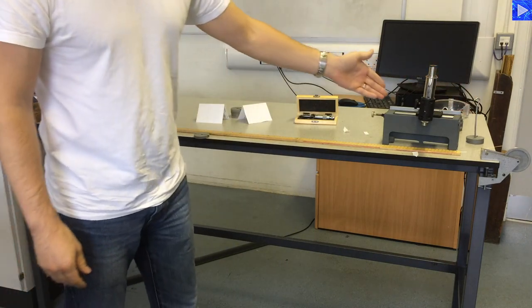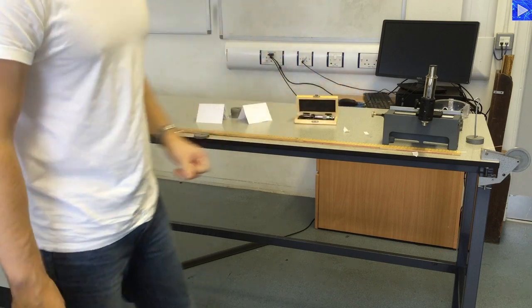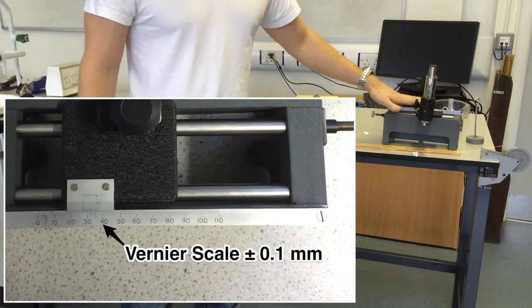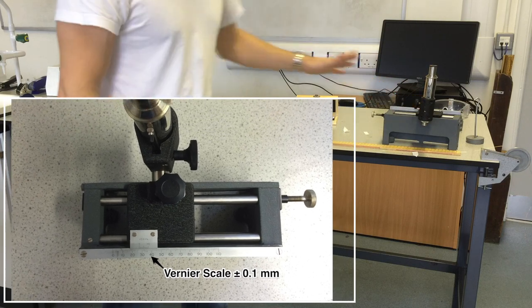Some masses for a load and a travelling microscope to measure the extension of the wire. The travelling microscope has a vernier scale so that will measure to the nearest tenth of a millimetre.